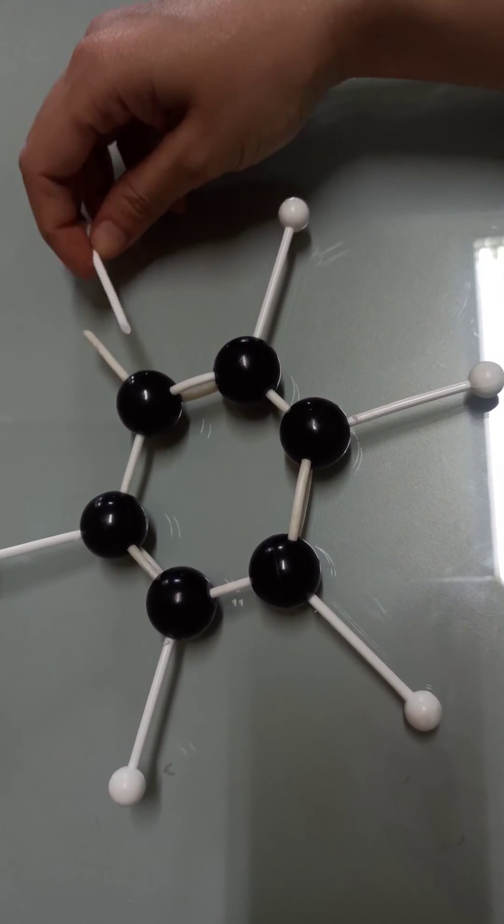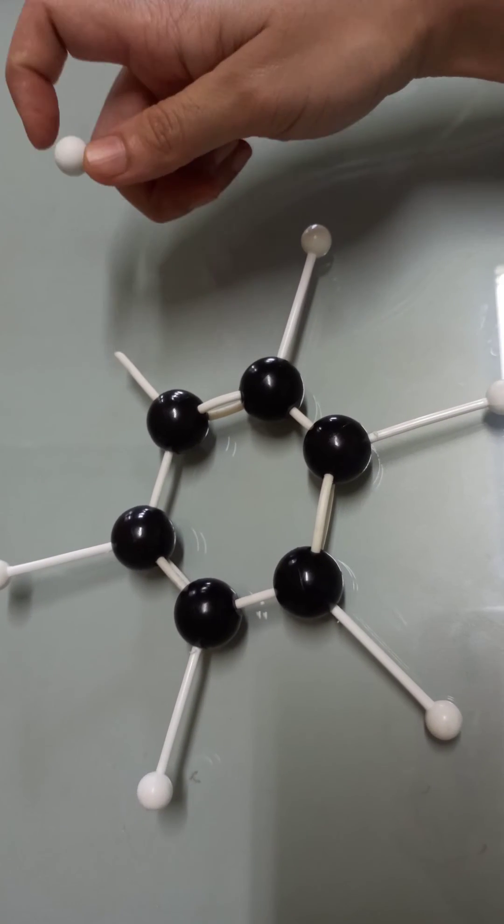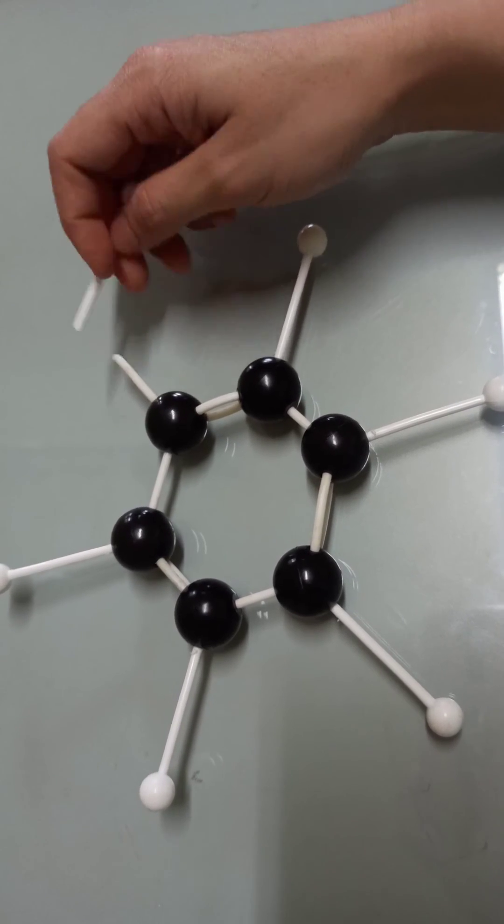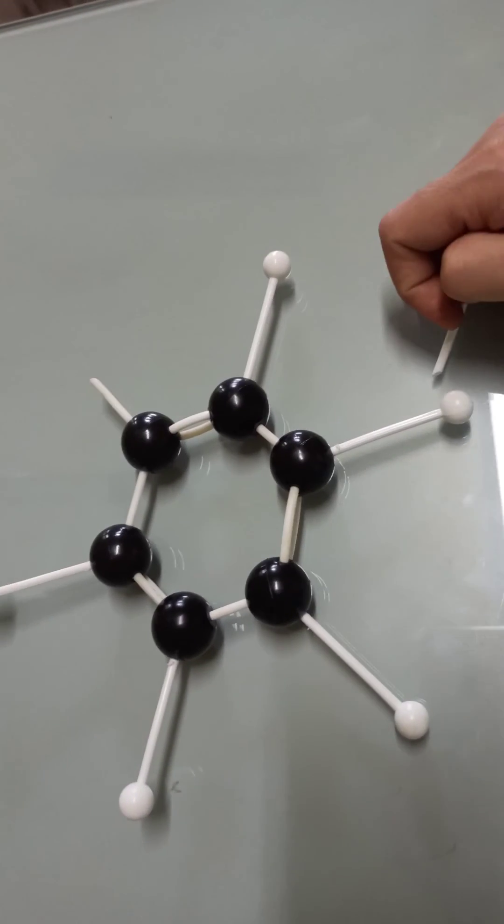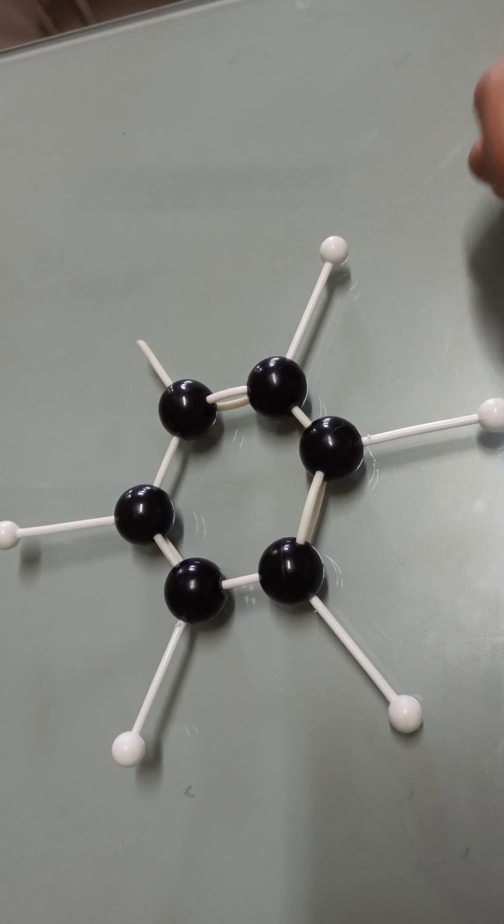Earlier it is this one, because we have already explained this one. This is a hydrogen. Now I replace this hydrogen with this bond. It is C6H5. Now I think you can easily differentiate benzene and phenyl.